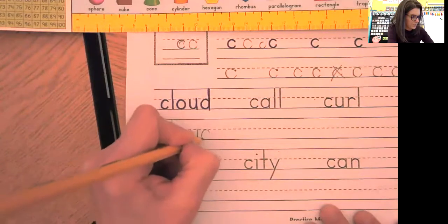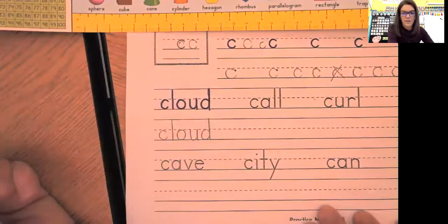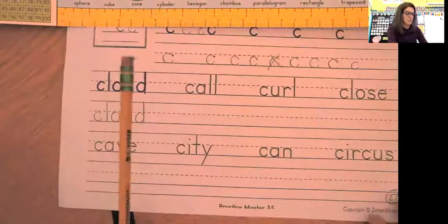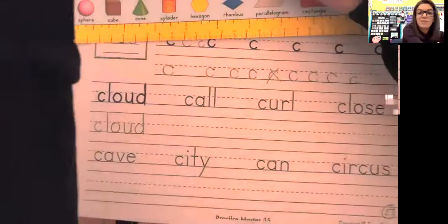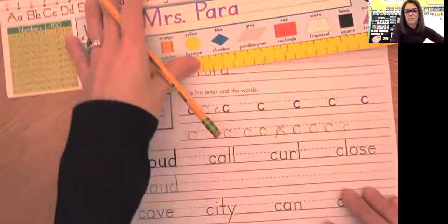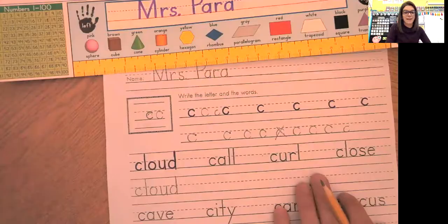Nice and slow. You're going to do the same thing. Trace, trace, trace, trace. Write, write, write, write. Take your time. If you would like to circle the C that you think is the best when you are all done, you can do that. We like to do that. That's fun.